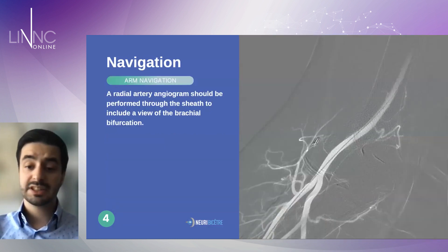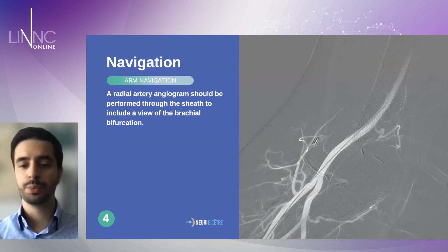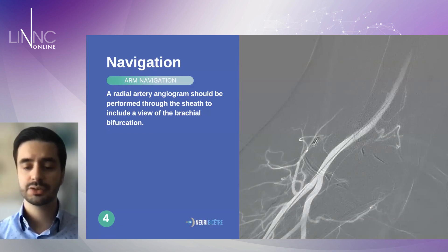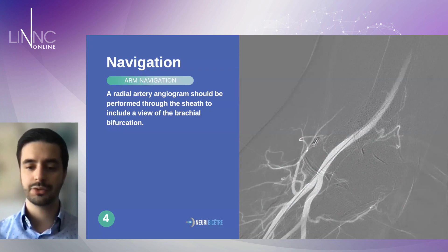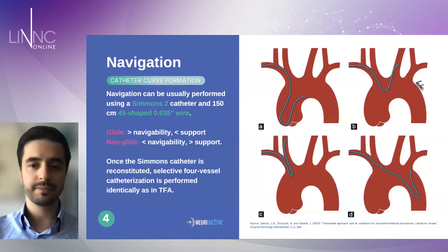After that, it's important to do an arm angiogram at the cubital fossa to understand anatomical variants and identify the recurrent artery, to avoid wrongly catheterizing this vessel since it also travels upward like the brachial artery.